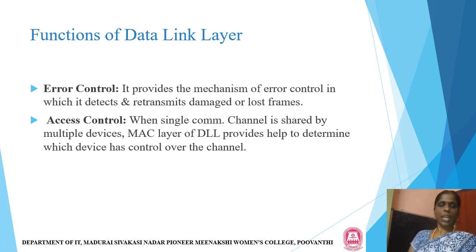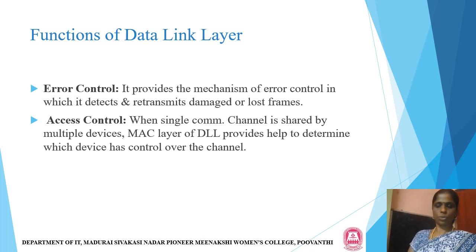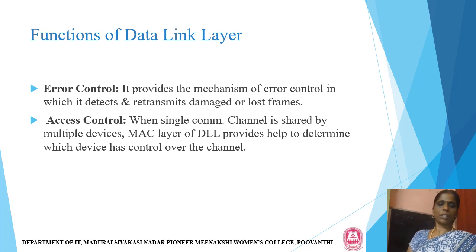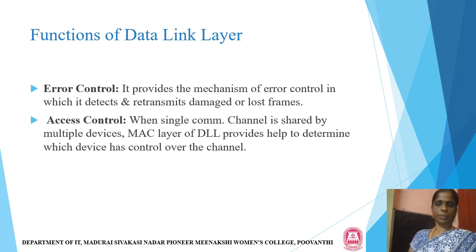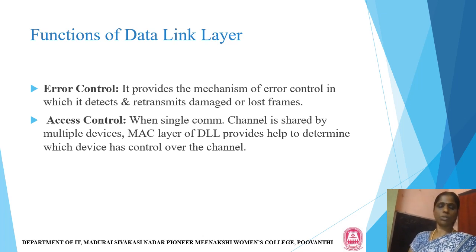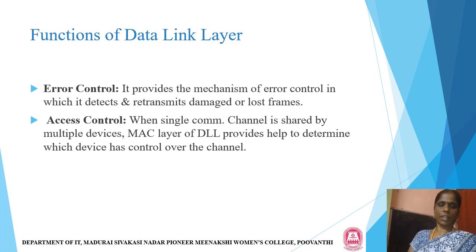Further functions of the data link layer: Error control — it provides a mechanism to detect and retransmit damaged or lost frames using concepts such as cyclic redundancy check (CRC) and Hamming code distance. Errors in the data link layer include single errors and burst errors, which are identified and rectified by retransmitting the damaged data. Access control — when a single communication channel is shared by multiple devices, the MAC layer determines which device has control over the channel.